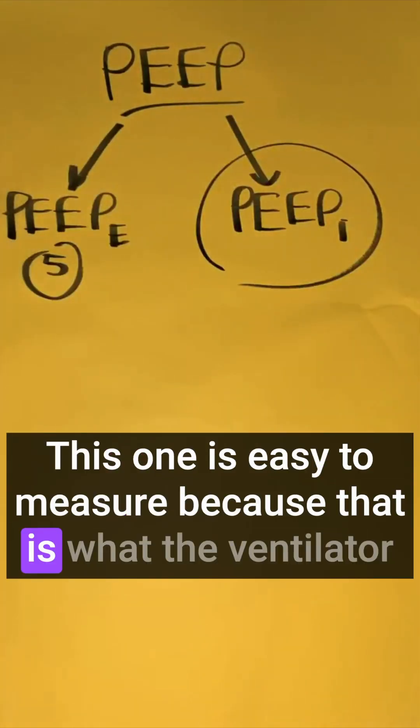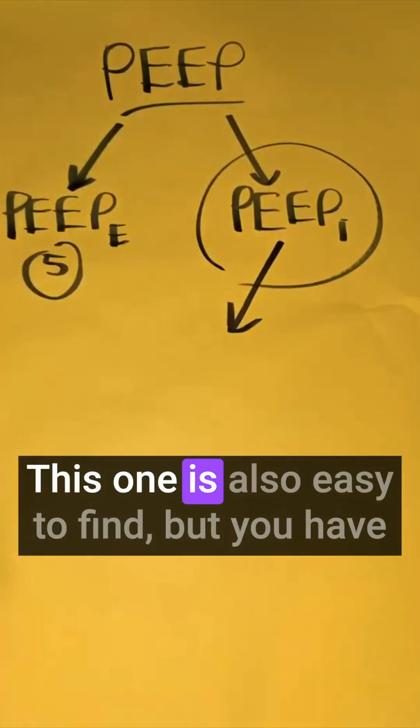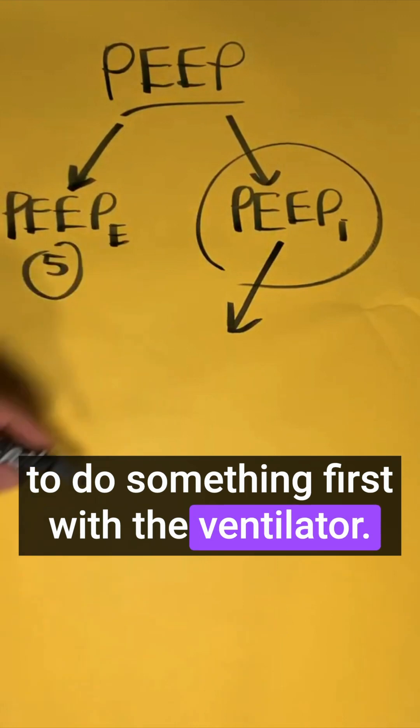This one is easy to measure because that is what the ventilator tells us that the machine is providing. This one is also easy to find, but you have to do something first with the ventilator.